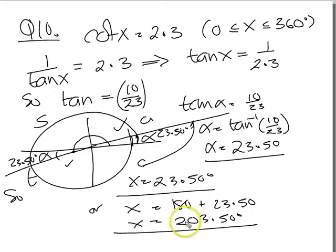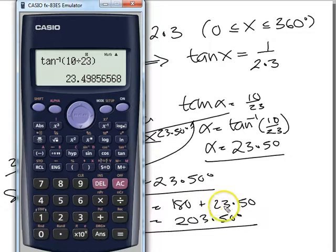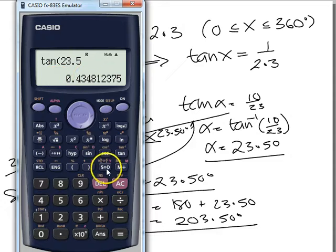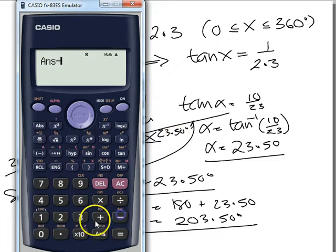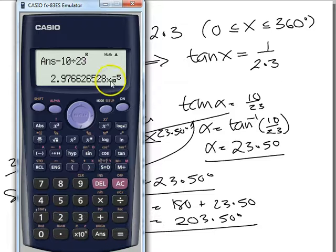So there we are then. There's our two answers. Let's just check them in the calculator. So we've got tan of 23.50. Tan 23.5. 0.43. Yeah, 0.43. 10 over 23. I'd better check that. Is it 10 over 23? Minus 10 divided by 23. We should get really small. Yeah, we do. Very, very small. So that one's okay.